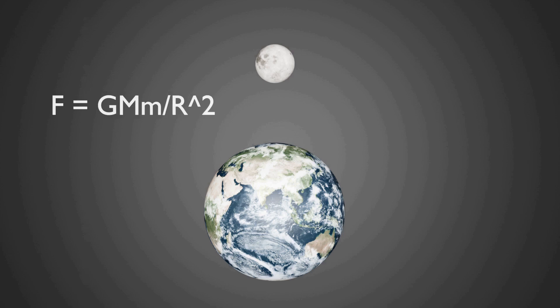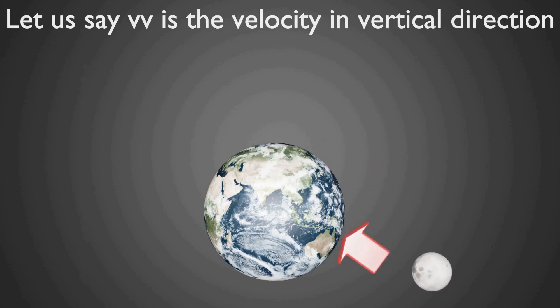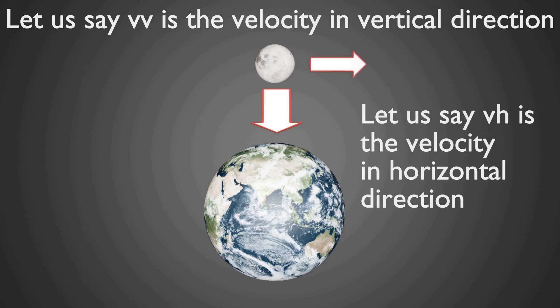The moon is pulled by gravitational force towards the Earth, which we will show here as the vertically downward direction. This gravitational force on the moon makes it move at a certain speed in the same direction. Now, the moon has a certain speed in the horizontal direction.